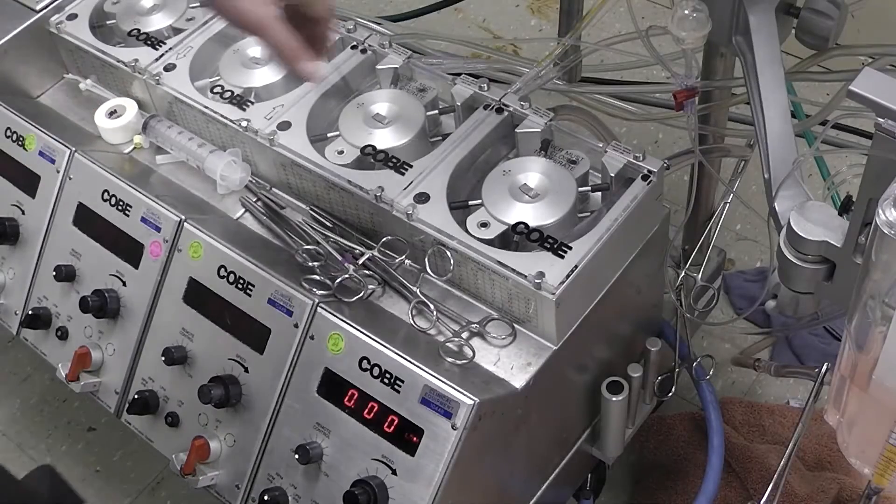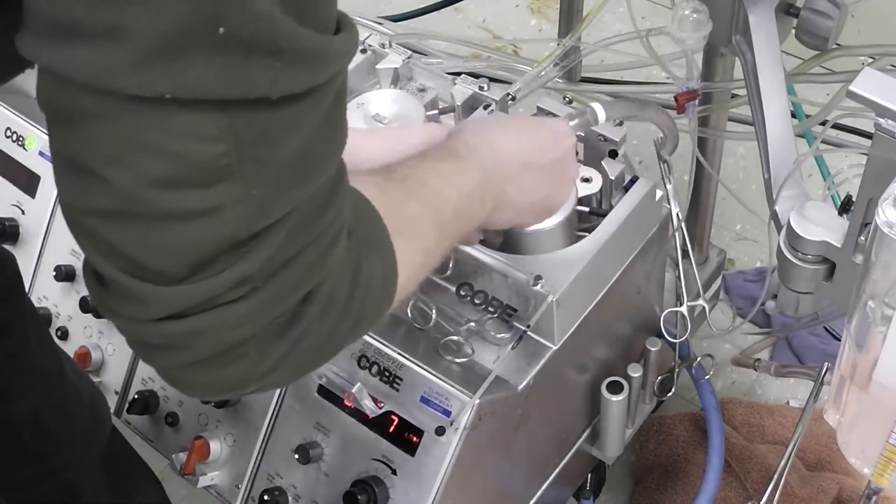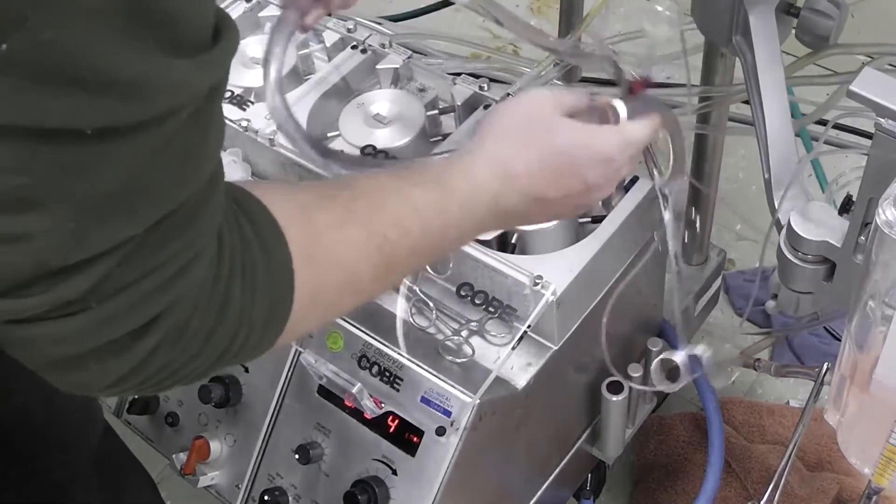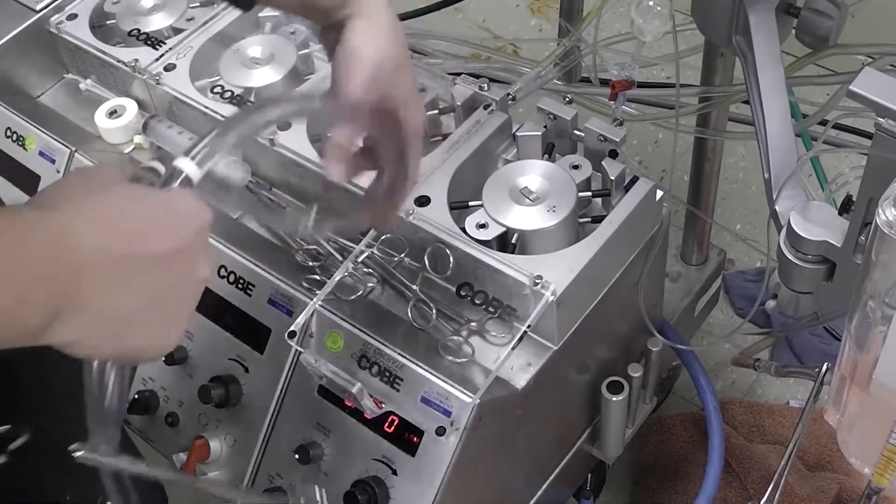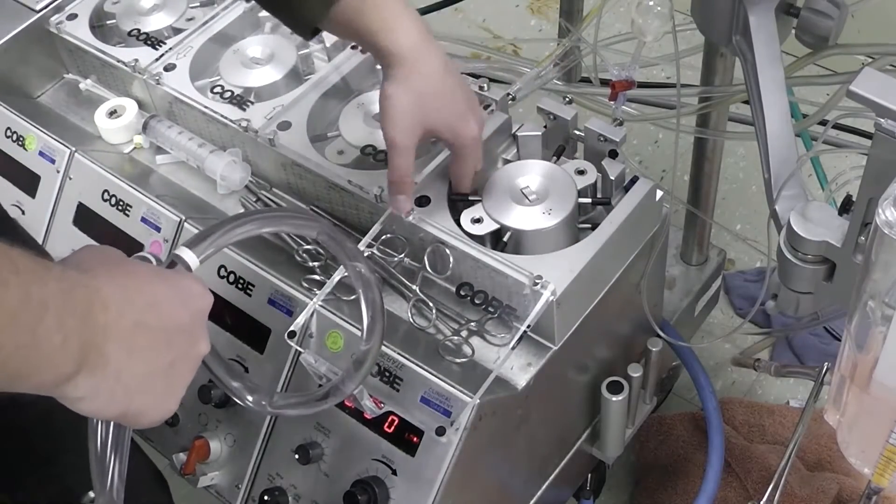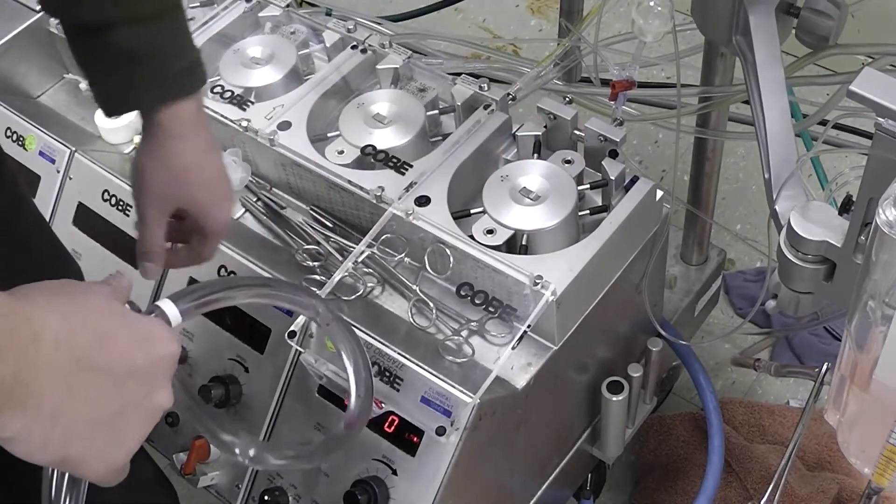Next we're going to remove the arterial line from the pump head and we're going to save this tubing so that we can inspect what went wrong with it. We're also going to look in the raceway here and see if there's any debris or anything sharp or anything in there that may have caused the pump head failure in the first place.